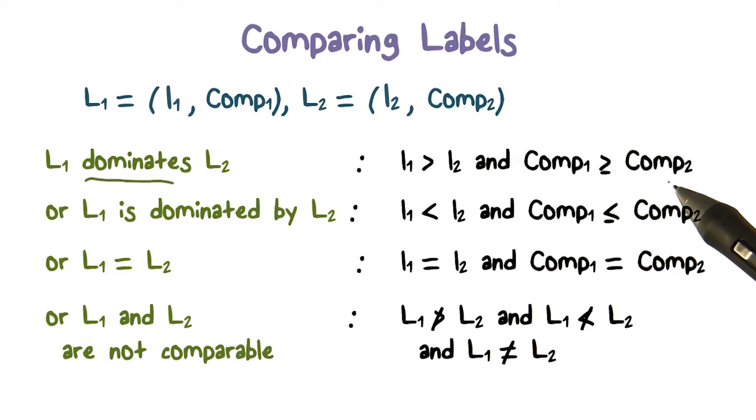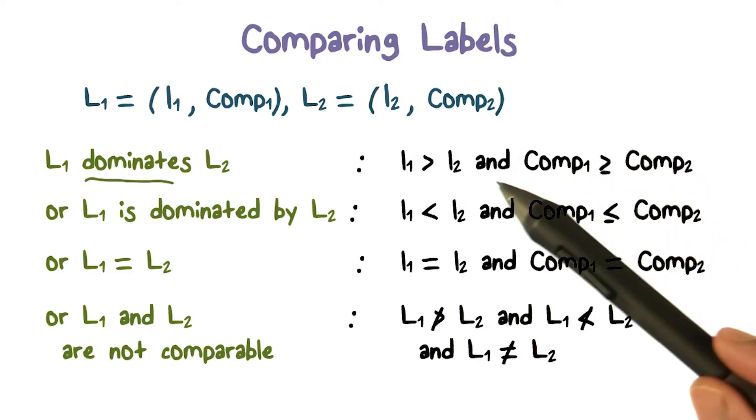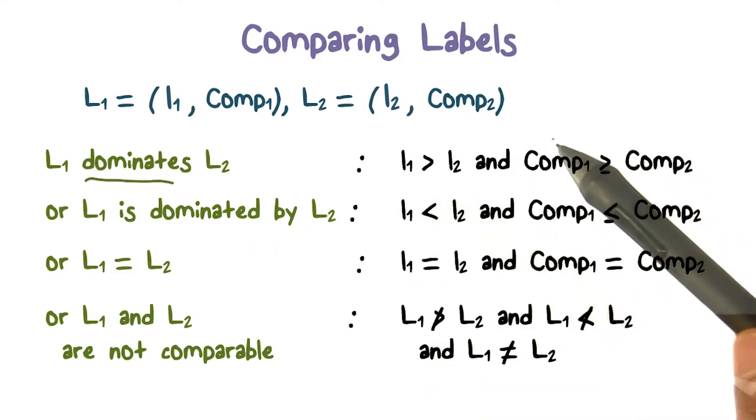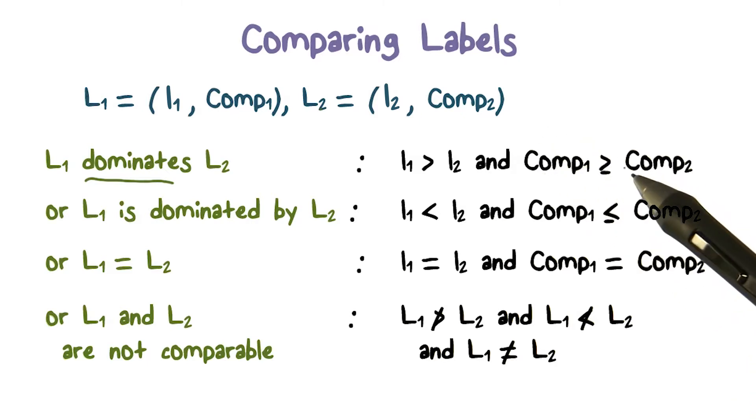So essentially, we're saying L1 is going to dominate if it's higher sensitive level. And the categories actually are a superset or contain the categories of compartment 2.